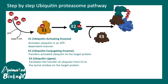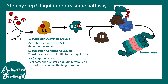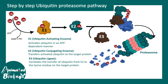E3 facilitates the transfer of ubiquitin from E2 to the lysine residues of the target protein. Always remember that lysine is the residue that gets ubiquitinated. After polyubiquitination — meaning ubiquitination several times — the proteasome recognizes this polyubiquitin tag and degrades the protein, just like a shredding machine.